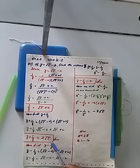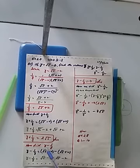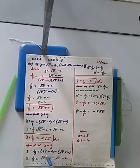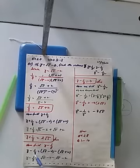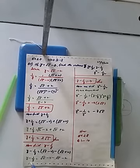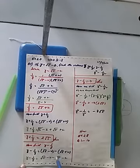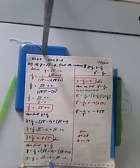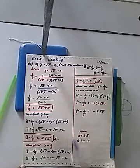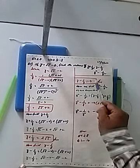Now we find the value of y minus 1 upon y. So y minus 1 upon y equals under root 5 minus 2, and applying the minus sign to the value of 1 upon y, which is under root 5 plus 2, we open the bracket: under root 5 minus under root 5 cancels, and minus 2 minus 2 equals minus 4. So y minus 1 upon y is equal to minus 4.